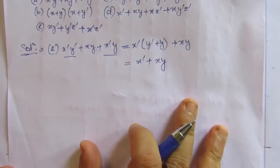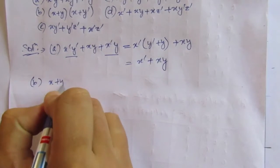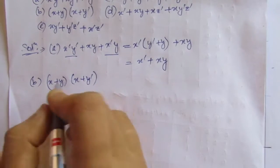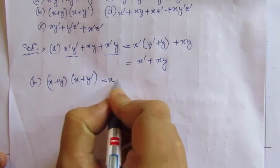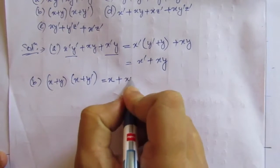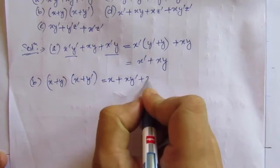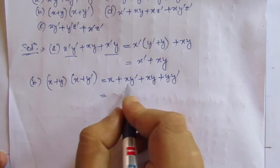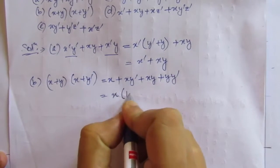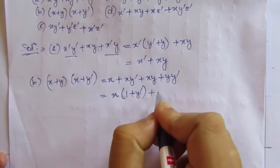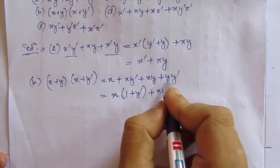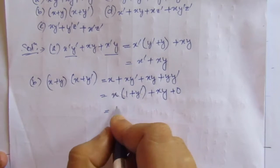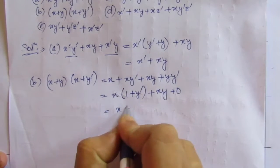Now let us solve the next part, b: (x + y)(x + ȳ). Multiplying it out: x·x is x, plus xȳ, then yx, that is +xy, plus yȳ. If we take x common from the first three terms, we get x(1 + ȳ) + xy. Since yȳ is 0, and 1 + ȳ equals 1, we get x + xy.